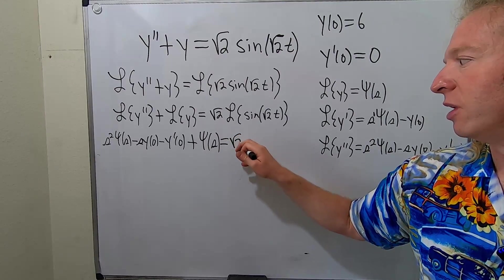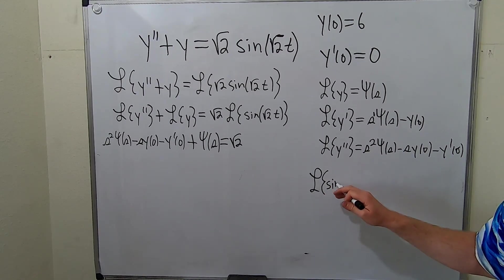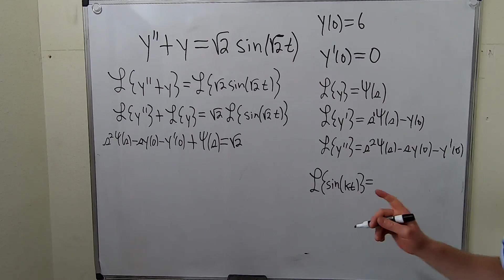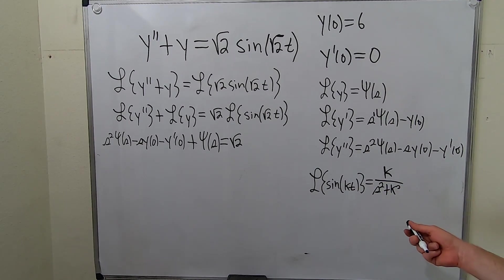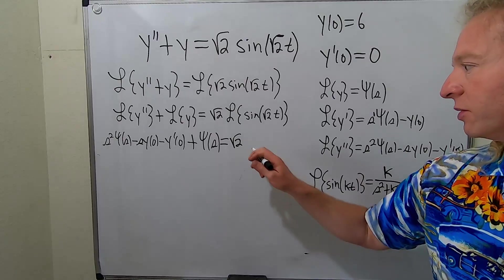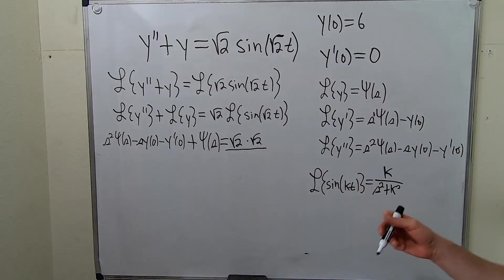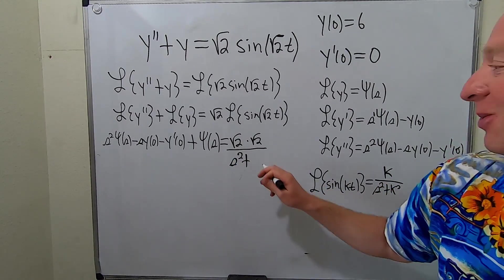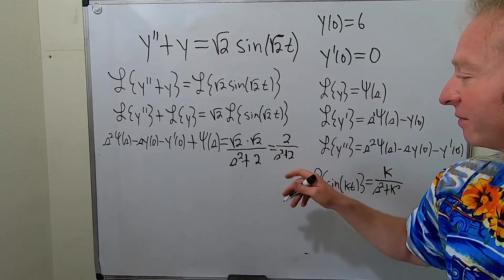This is equal to the square root of 2 times the Laplace of sine of this. Recall the formula: the Laplace of sine kt is k over s squared plus k squared — just remember, cosine has the s, sine has the k. So in this case, k is the square root of 2. So it's square root of 2 over s squared plus k squared. Look at that — square root of 2 times square root of 2 is 2. And when you square the square root of 2 you get 2. So you get 2 over s squared plus 2.